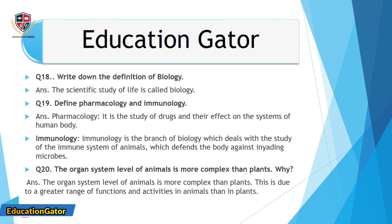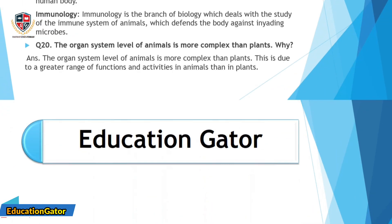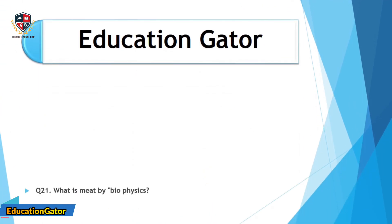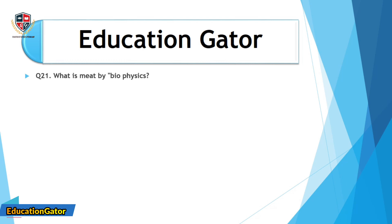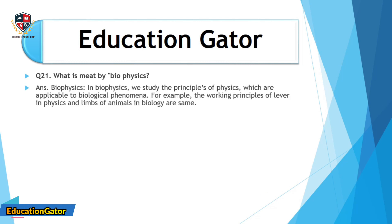Question number 20: The organ system level of animals is more complex than plants. Why? Ans. The organ system level of animals is more complex than plants. This is due to a greater range of functions and activities in animals than in plants.